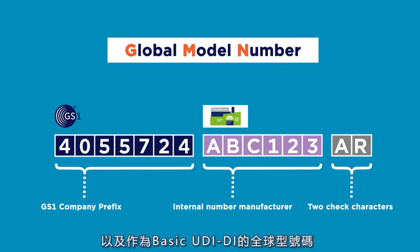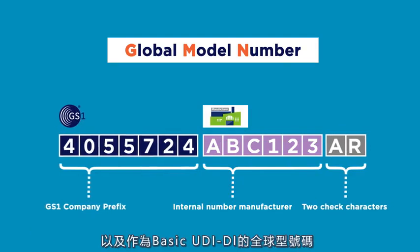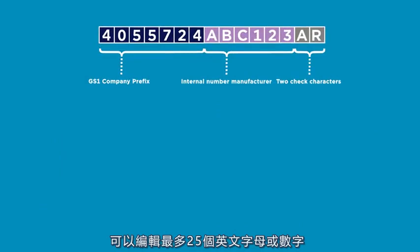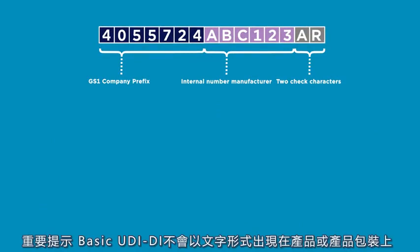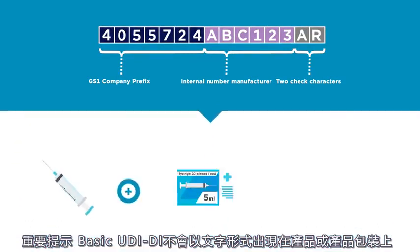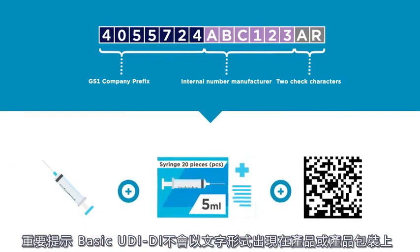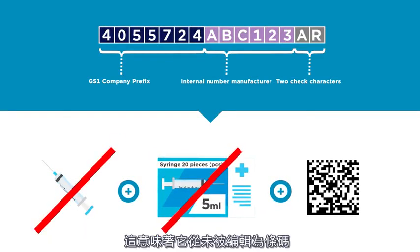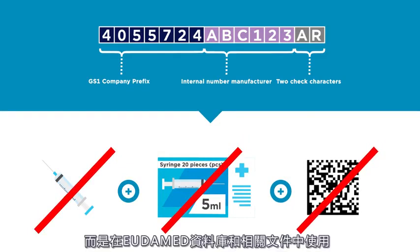The global model number — that is the basic UDI-DI — which can be up to 25 characters long, is ready. The basic UDI-DI does not appear in text form or in a barcode on the products or product packaging. This means it is never encoded in a barcode, but is used in the EUDAMED database and in relevant documents.